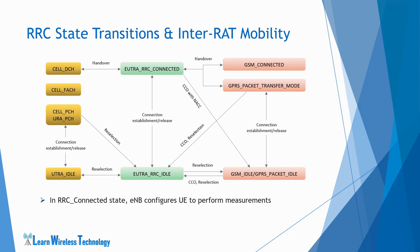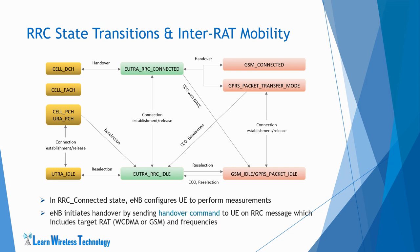In RRC connected state, the eNodeB may configure the UE using broadcast or dedicated control information to perform measurements. The UE follows the measurement parameters and performs IRAT neighbor cell measurements and reports to the eNodeB. The eNodeB will decide to initiate handover to UTRA or GRAN, and conveys the handover decision to the UE by sending an RRC connection release message including UTRA or GRAN information containing the target RAT and frequency. For handover towards GRAN, IRAT cell change order with NACC (network assisted cell change) is supported.